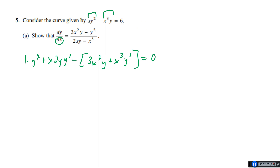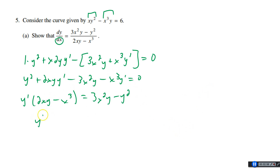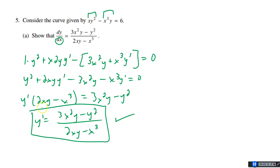Then minus: 3x²y (leaving y alone) plus x³·y' (leaving x³ alone and differentiating y). That all equals 0 because the derivative of a constant is 0. Distributing and collecting y' terms: y² + 2xy·y' − 3x²y − x³·y' = 0. Pulling out y': y'(2xy − x³) = 3x²y − y². Dividing, we get y' = (3x²y − y²)/(2xy − x³). Check mark — shown it!